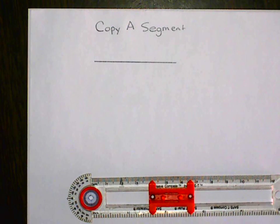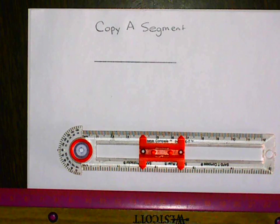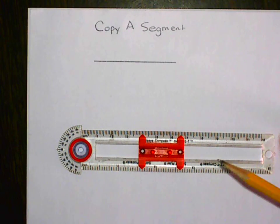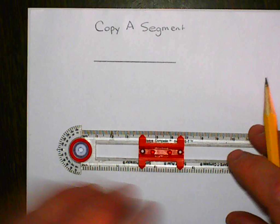As in any construction, you can only use a compass and straightedge - those are the only two tools you're allowed to use. To copy a segment, we're creating another geometric object.